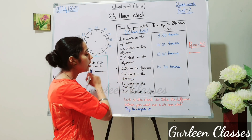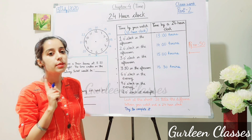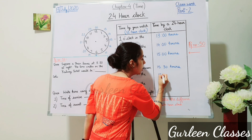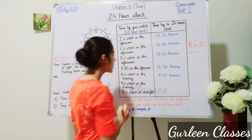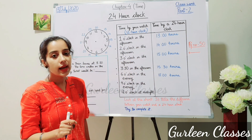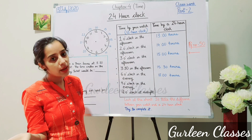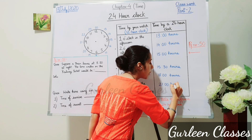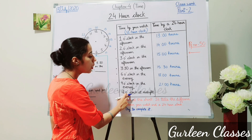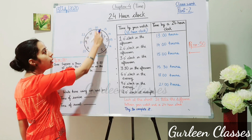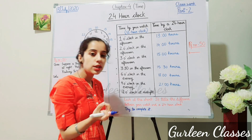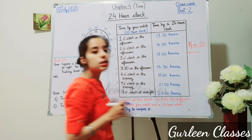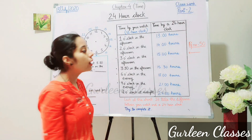6 o'clock in the evening — in 12-hour clock that is 6 PM. In 24-hour clock, 6 becomes 18, so we write 18:00 hours. 9 o'clock in the evening is 9 PM, and in 24-hour clock we write 21:00 hours. 10 o'clock in the evening. 12 o'clock at midnight — here 24 hours are completed, so you can write it as 00:00 hours or 24:00 hours. You may pause the video and write these answers in your NCERT book, page number 15.